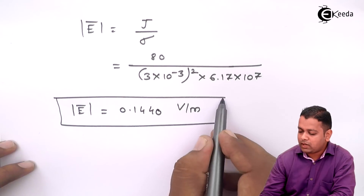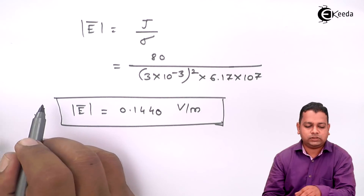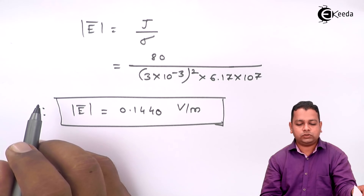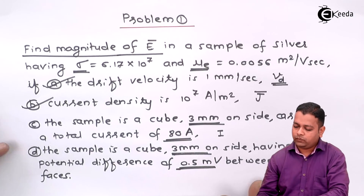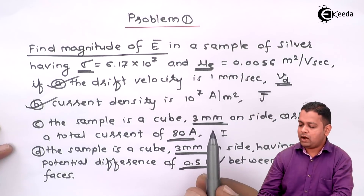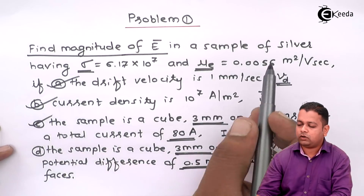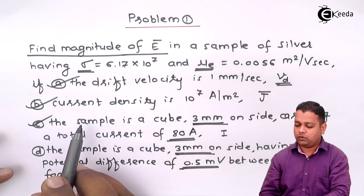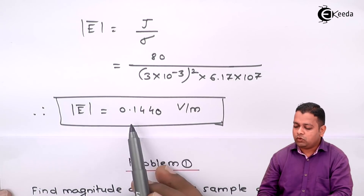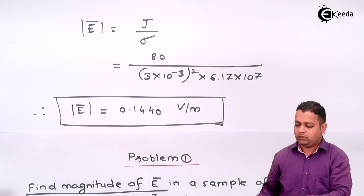So this is the required answer for part C. In part C, 80 amperes of current and a 3 mm side of cubical silver material were given, and we determined the electric field intensity magnitude to be 0.1440 volts per meter.